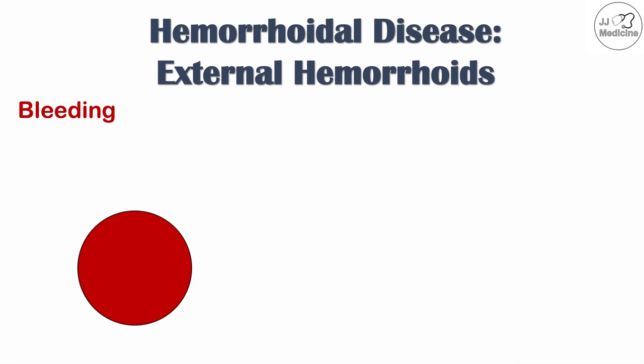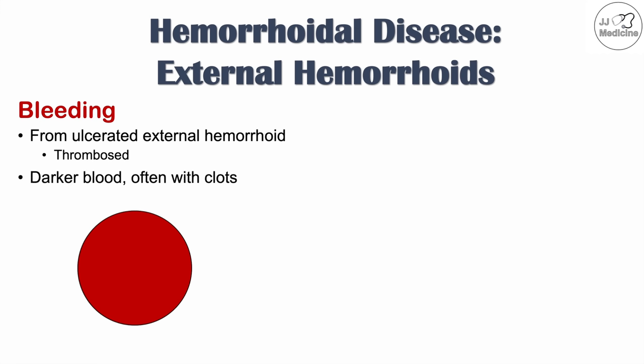Another sign of external hemorrhoids is bleeding, often from an ulcerated external hemorrhoid. An ulcerated external hemorrhoid is more likely when it has become thrombosed. The key difference from internal hemorrhoid bleeding is that external hemorrhoid bleeding is darker in coloration, and clots are often visible.